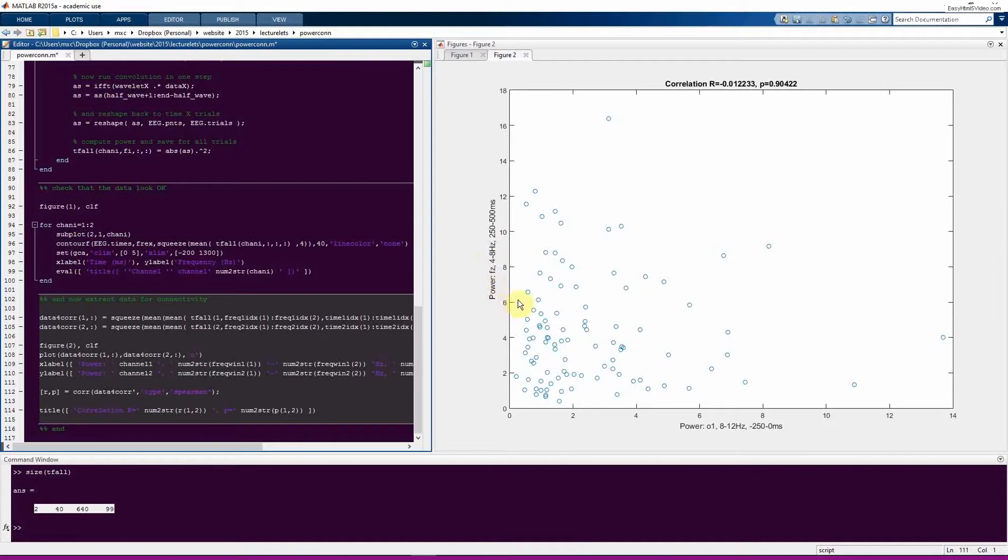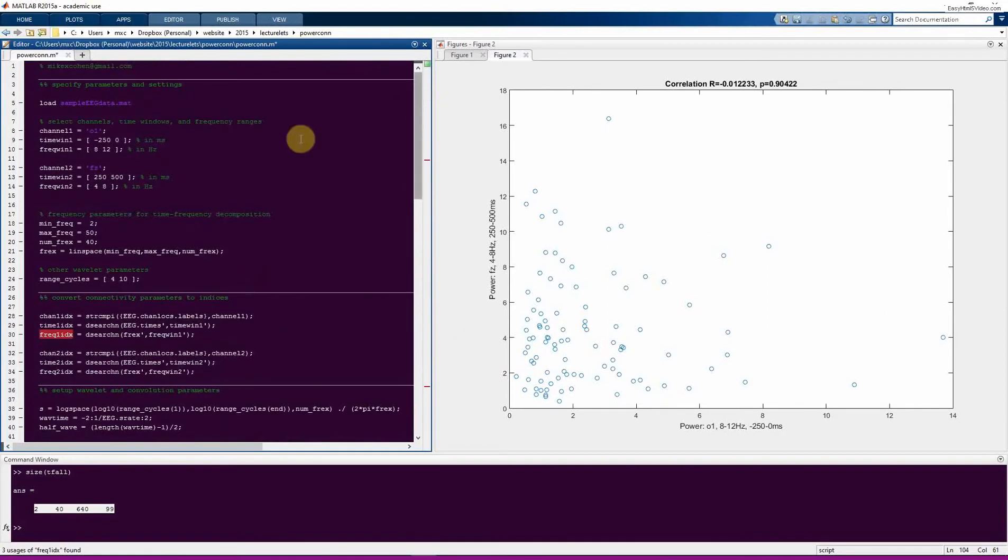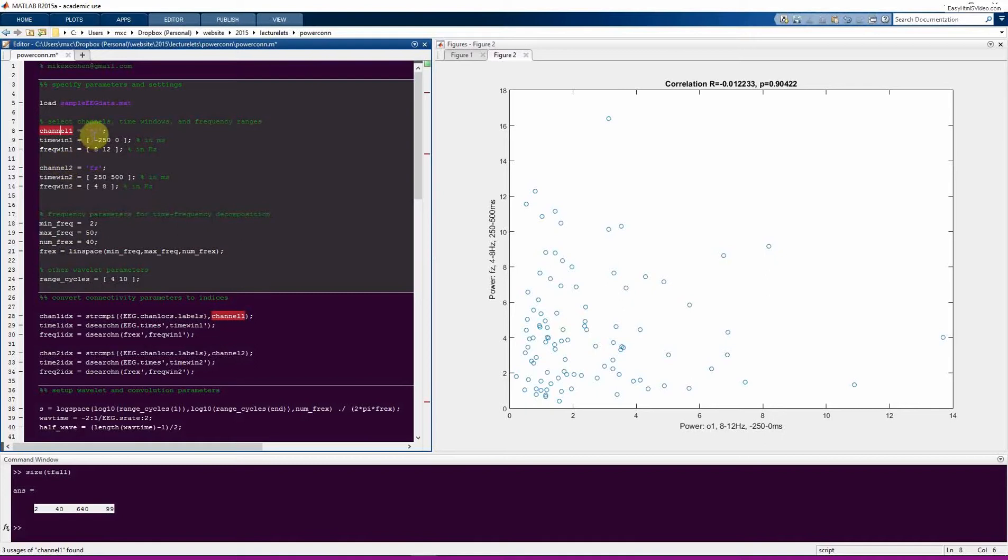But here, before writing up this null result and putting too much trust in this, it's good also to do some checking of the code to make sure that the code is correct so that we didn't make any mistakes in the code that would have given us a null result. For example, if there was a problem with extracting the time points or the frequencies. So how do you think we might be able to check this analysis to make sure that it worked? Well, I think we could test this by using exactly the same, by repeating all this time frequency channel information. And then we should see a perfect correlation. So we change this to fzed and we change this to 250 to 500 milliseconds and then we change this to 4 to 8. So now all these parameters are the same.